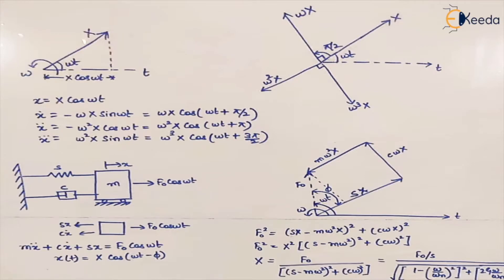To find the value of this ratio, we'll use the graphical approach method. We can also use the analytical method, which we've already discussed for finding amplitude equations. We are taking a lumped parameter system and assuming a body of mass m attached to a spring of stiffness s and a dashpot with damping coefficient c.